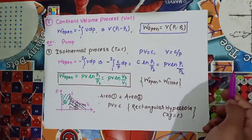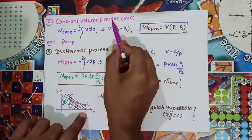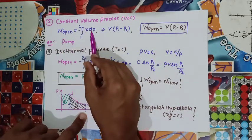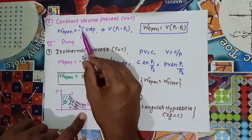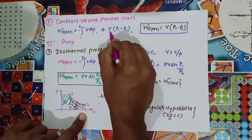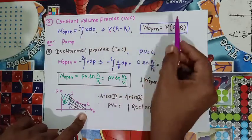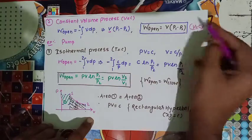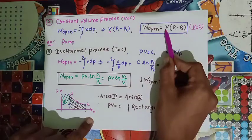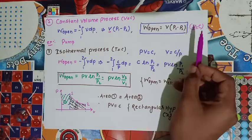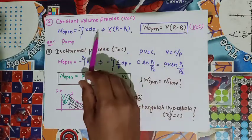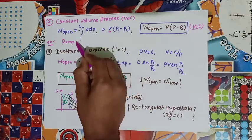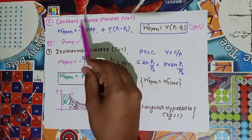The second process is constant volume. Applying the open work formula VdP with constant volume, we can take V outside the integral, giving V(P1 - P2). So the open work for a constant volume process is V(P1 - P2). An example of a device operating under constant volume is a pump.